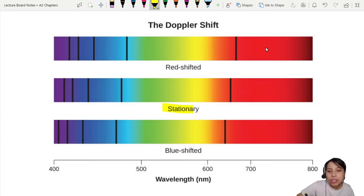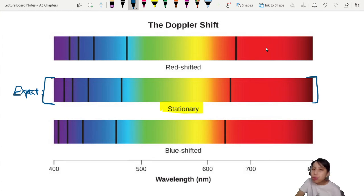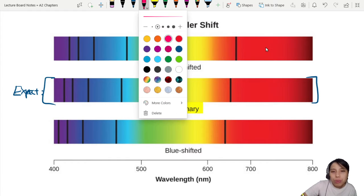So maybe in stationary lab, we expect the spectra to look like this is absorption spectra. But then when the object is moving towards or away from you, it could be either red shifted. So red shift is moving away from you.